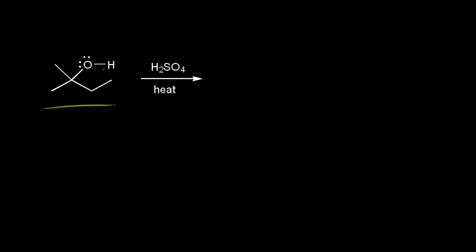On the left, we have a tertiary alcohol. The carbon bonded to the OH would be the alpha carbon, and that carbon is directly bonded to three other carbons, which is why this is tertiary. This carbon, let's call beta one. This carbon, let's say this is the beta two carbon. And finally, this would be the beta three carbon.